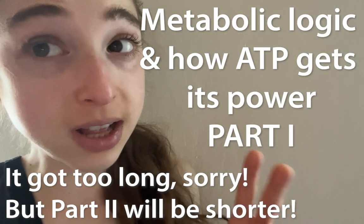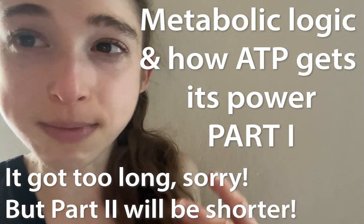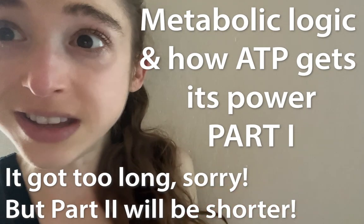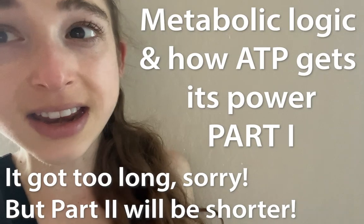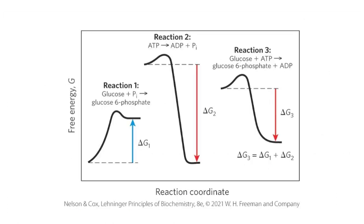Today is the first of two lessons on interim metabolism and metabolic logic. We're going to look at how ATP gets its power in this lesson, how reactions are favorable or not favorable, the idea of steady state versus equilibrium, and then next class we'll look at how ATP is able to power unfavorable reactions.